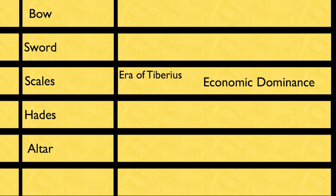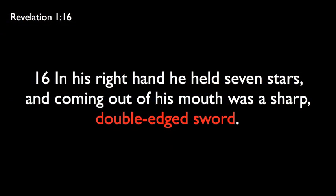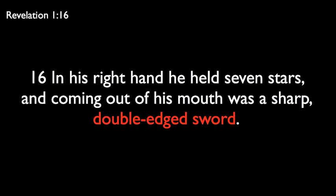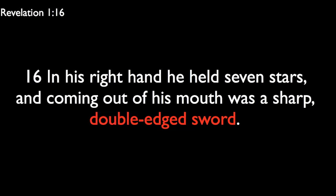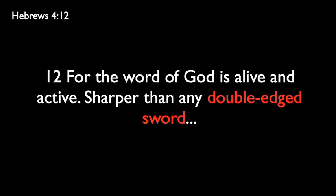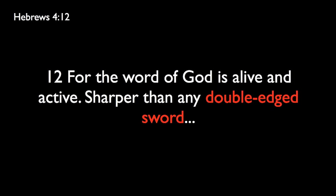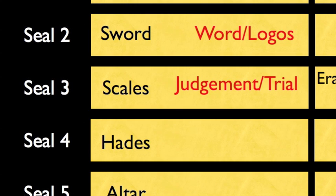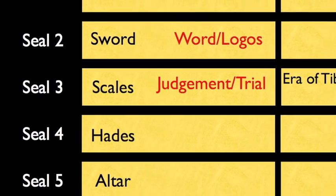Notice that along with the era of Tiberius, the constellation reference is the scales. These scales likely signify judgment. The previous constellation is the sword. The sword is spoken of only in a few texts. Revelation 1:16 states: 'In his right hand he held seven stars, and coming out of his mouth was a sharp double-edged sword.' Revelation 2:16 states: 'Repent therefore, otherwise I will soon come to you and will fight against them with the sword of my mouth.' Hebrews 4:12 states: 'For the word of God is alive and active, sharper than any double-edged sword.' The double-edged sword represents the word. Jesus doesn't literally have a sword coming out of his mouth. The sword is simply a metaphorical representation of the Logos — God's word.